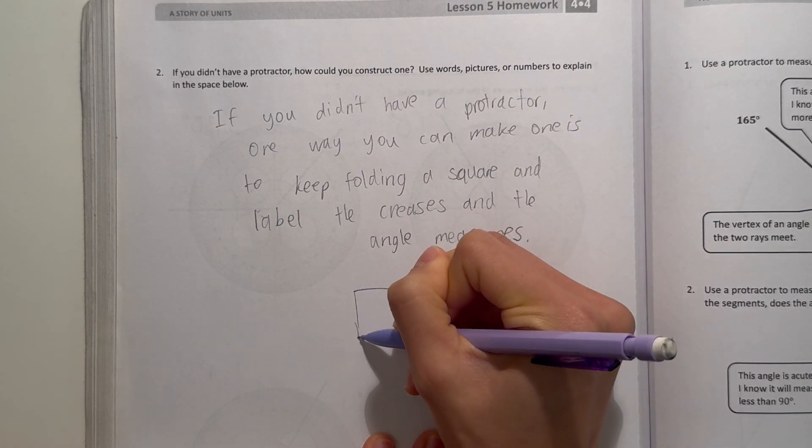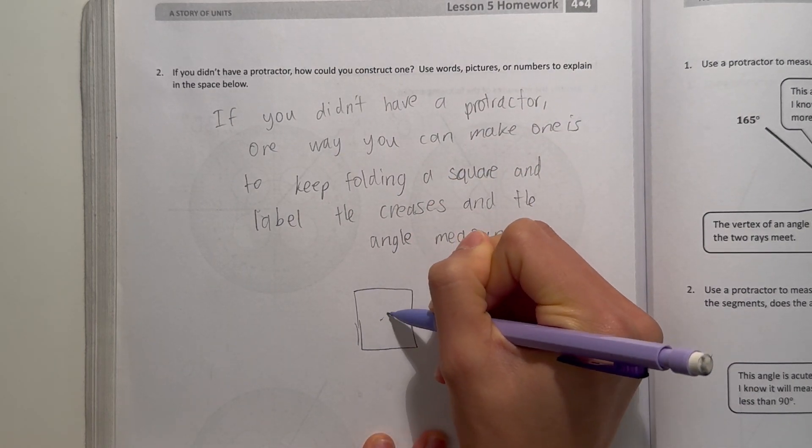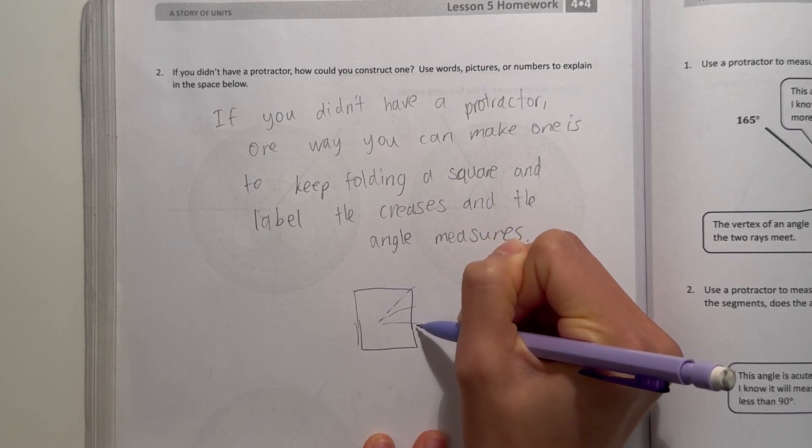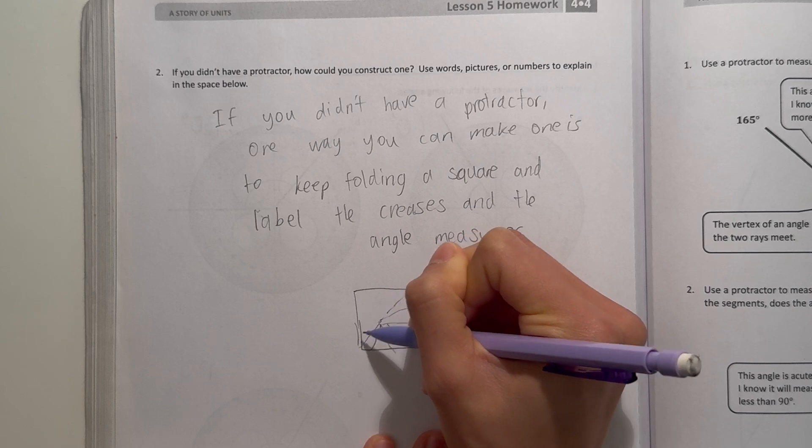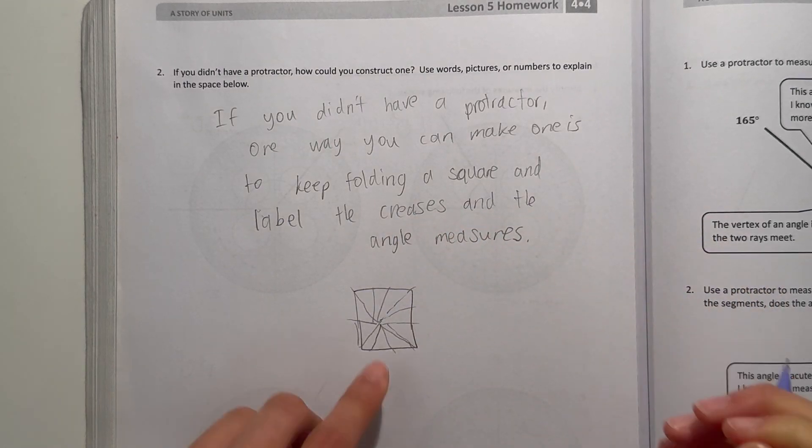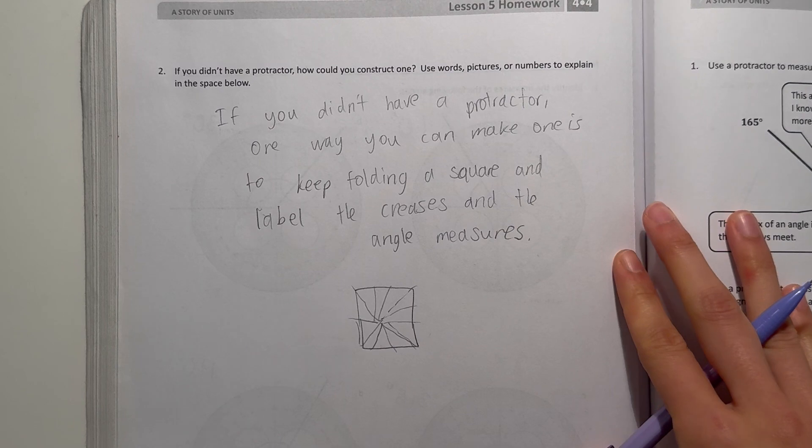So then you have one. If you want to kind of draw it out, it's like a square, and you just keep on folding it. That's a bad drawing, that's a really uneven drawing, that's okay.